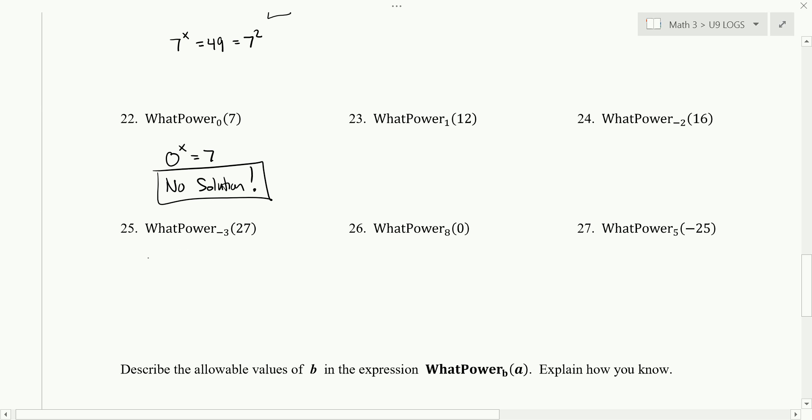Number 25 is asking the question negative 3 to what power is 27. Well, negative 3 to the power of 1 is negative 3. Negative 3 to the power of 2 is positive 9. Negative 3 to the power of 3 is negative 3 times negative 3 times negative 3, which is negative 27.